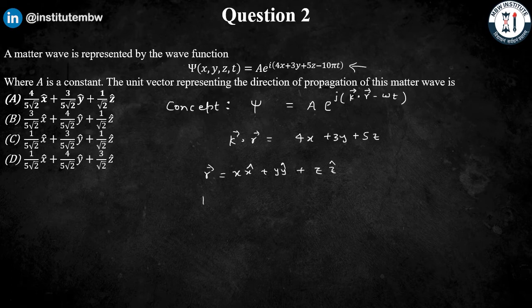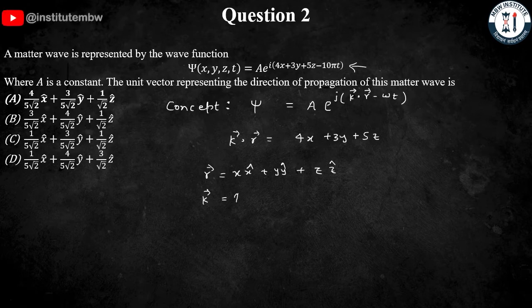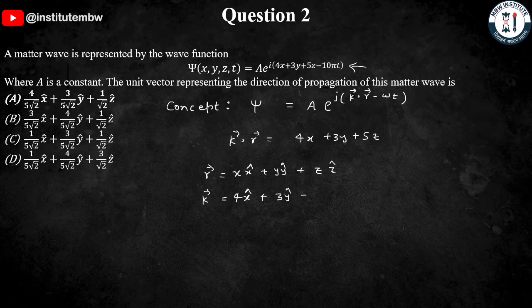then what should be the k⃗ vector so that k⃗·r⃗ will become 4x + 3y + 5z? So, k⃗ should be 4 x̂ + 3 ŷ + 5 ẑ. But we have to find out the unit vector.